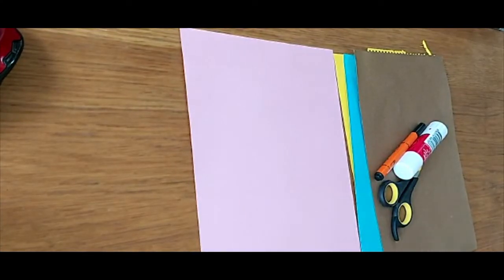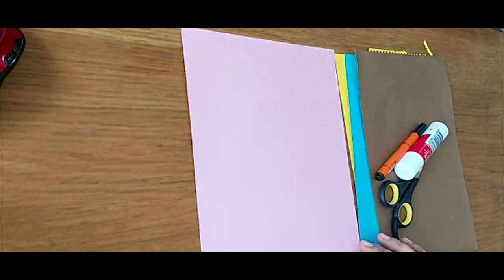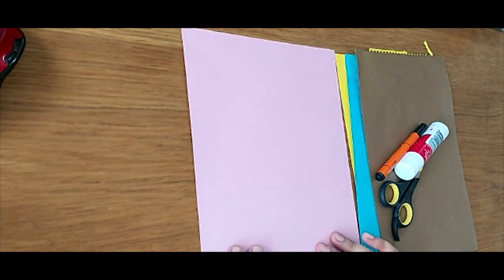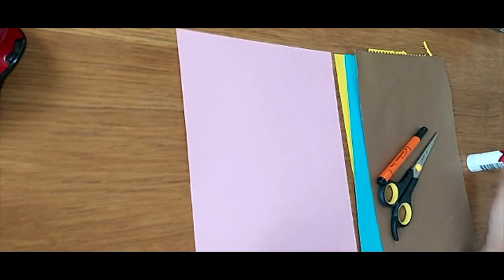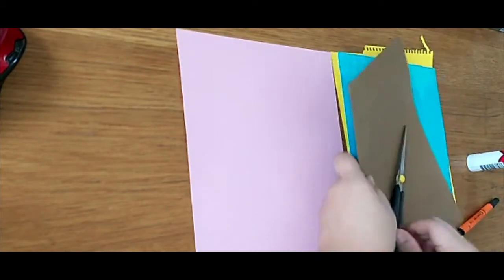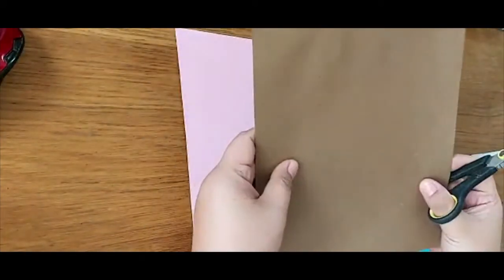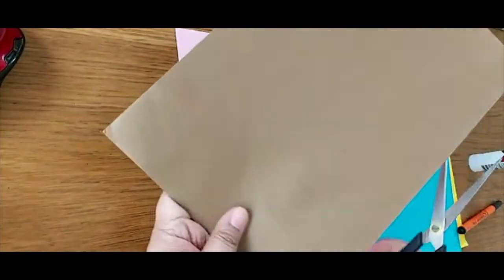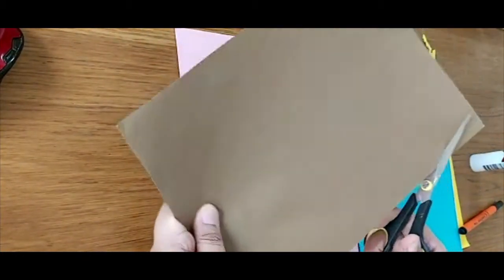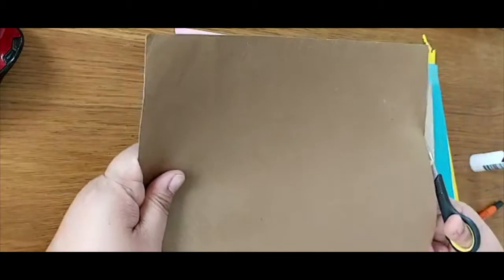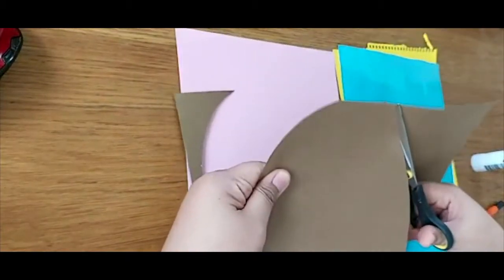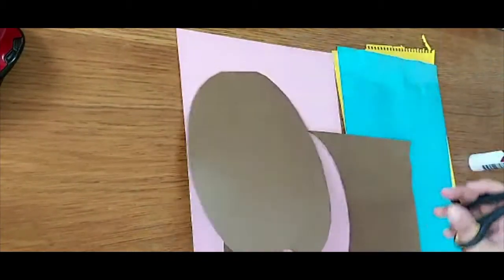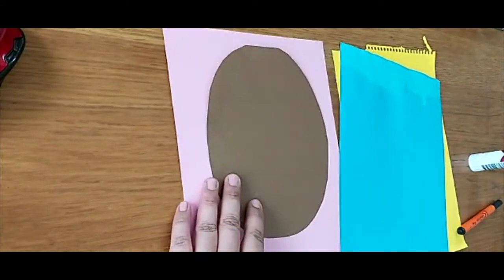Good morning KG1s, today we are going to do a five senses arts and crafts. We'll start with the face. I have here a brown paper. I'll just cut it into a circular shape. There you go.